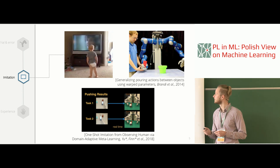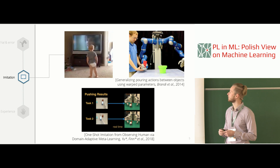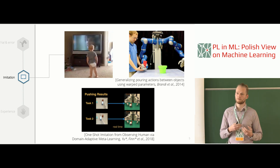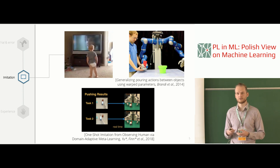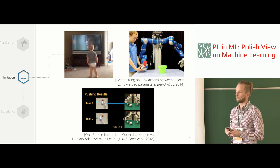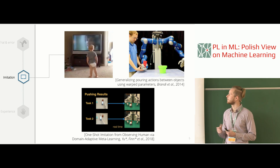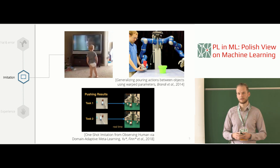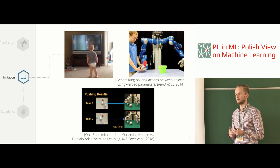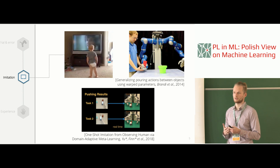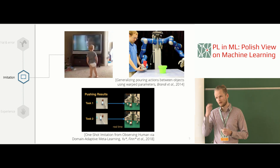Three years ago, providing demonstrations to a robot involved kinesthetic teaching — physically dragging the robot's arm to show it one particular skill. This field is also known as learning from demonstration. The medium was simpler and it was always just one particular skill being demonstrated.